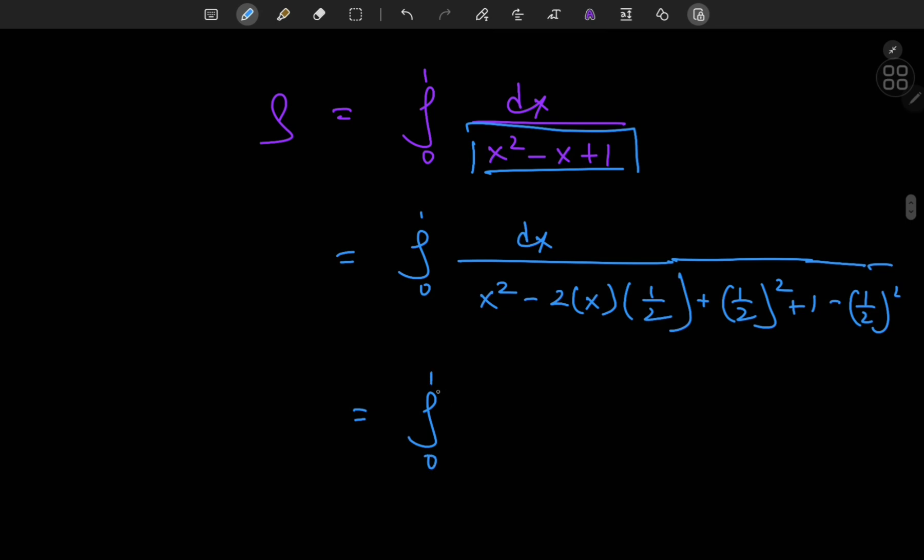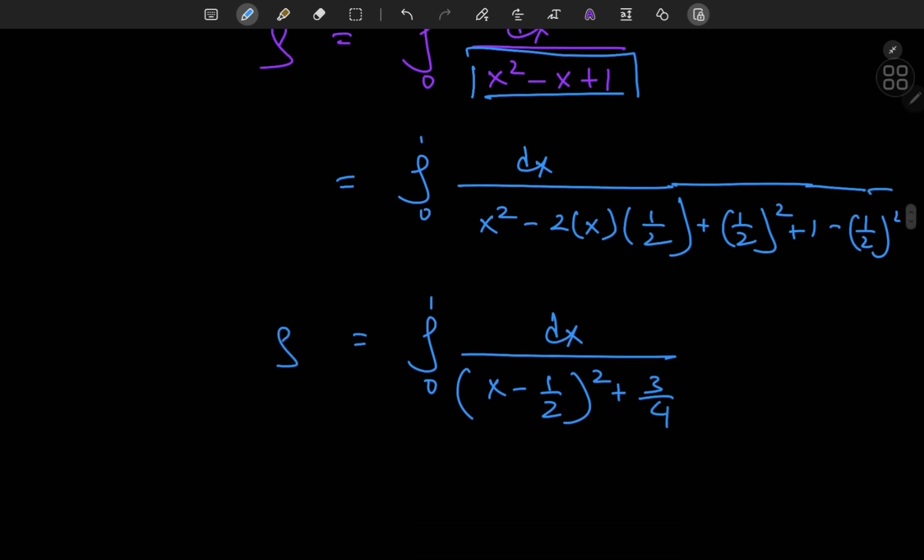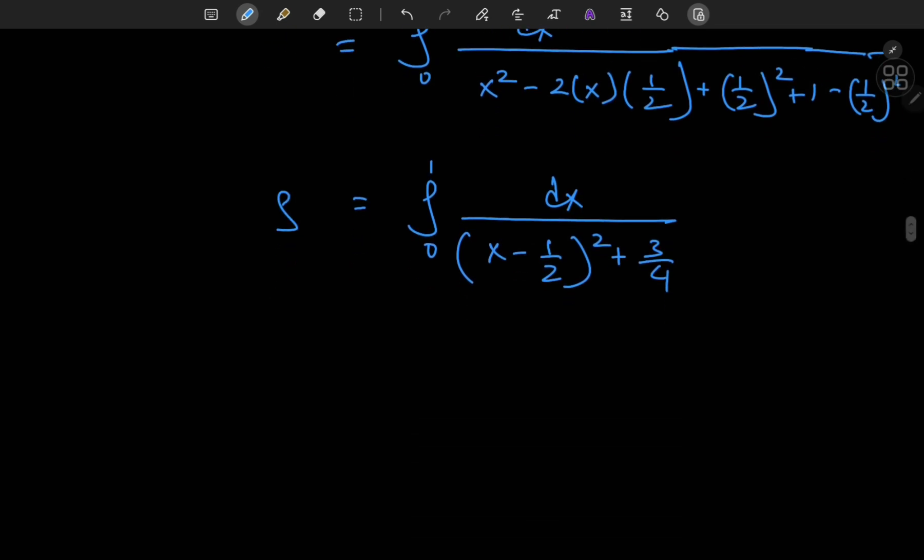So that means I have the integral from 0 to 1 of dx divided by x minus 1 half squared plus 1 minus a quarter is 3 quarters. So what we're left with is a simple inverse tangent structure.